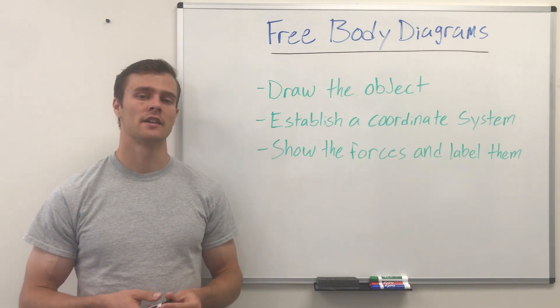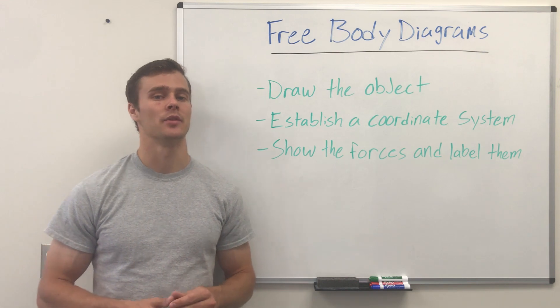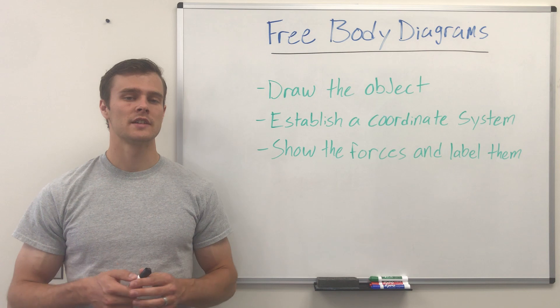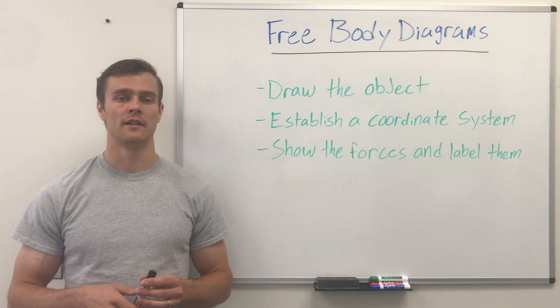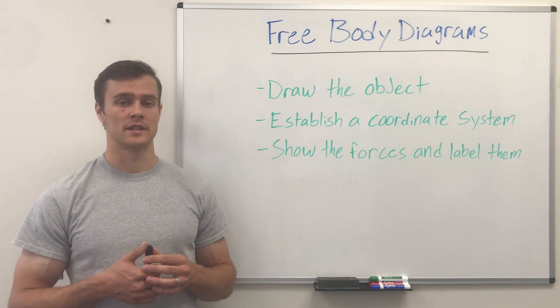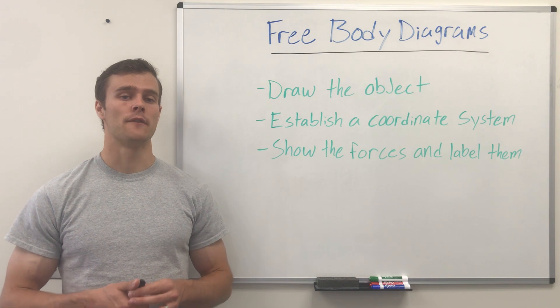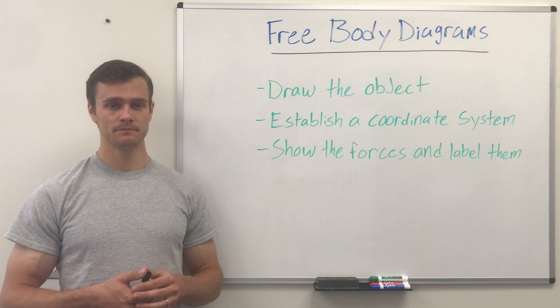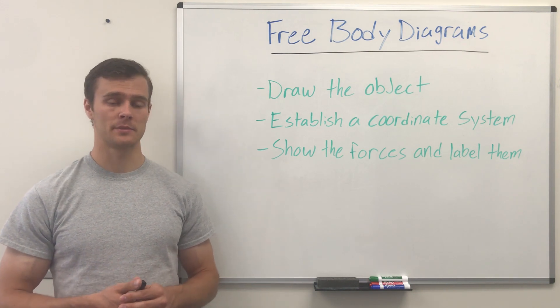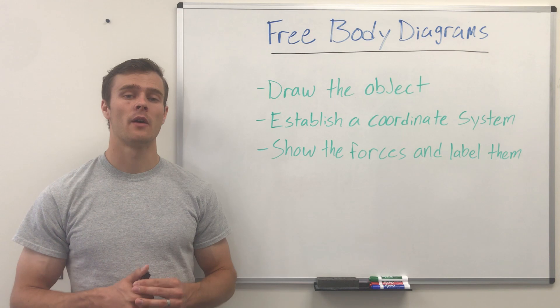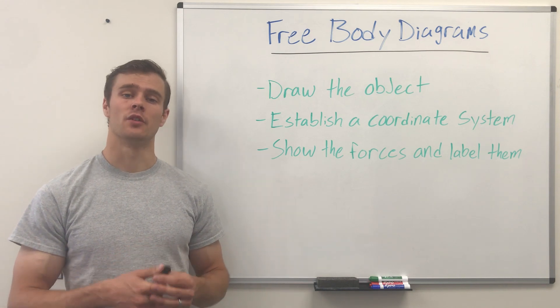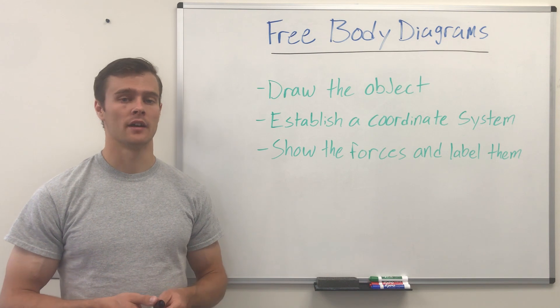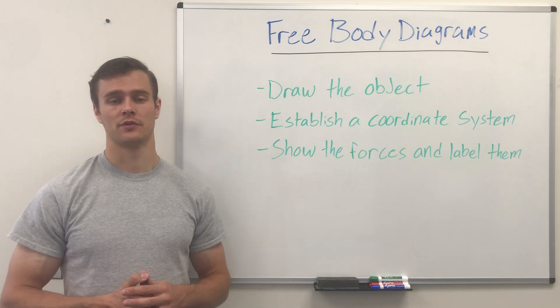So the third thing we need to do is show the forces acting on the object and then label them whether they're unknown or known. Oftentimes those forces will be gravity from the weight of the object itself, it could be a force acting on it like a cable or a rope pulling on it, or maybe there's a load sitting on top of the object like a beam. Or sometimes it's where that object is being held to the wall or up from the floor or whatever it might be resting on, you might get a normal force or a reaction force from that connection.